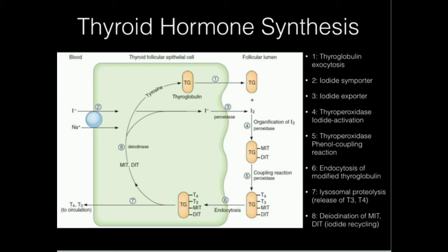All of this occurs while still attached to thyroglobulin, out in the lumen. Once iodinating and coupling are complete, the thyroglobulin is transported back into the follicle via endocytosis, where it's combined with a lysosome and proteolyzed. Any T3 and T4 that come off are put into the blood as hormones. Any remaining MITs or DITs are recycled by an enzyme called a diiodinase, which removes the iodine.